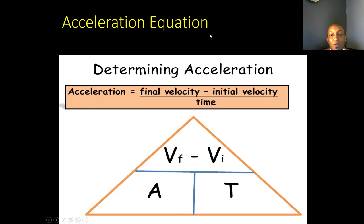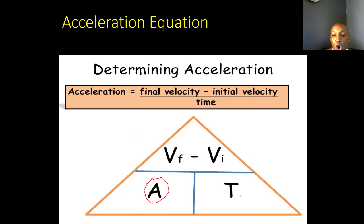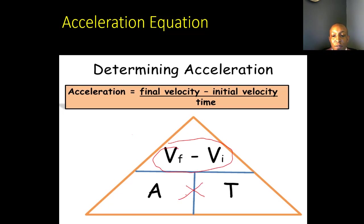Let's take a look at our acceleration equation in a triangle version. In order to determine acceleration, you have final velocity minus initial velocity over time. If we cover acceleration in the triangle, we see final velocity minus initial velocity over time. If we want to solve for time, it would be final velocity minus initial velocity over acceleration. And if we want to solve for velocity, that would be acceleration times time.